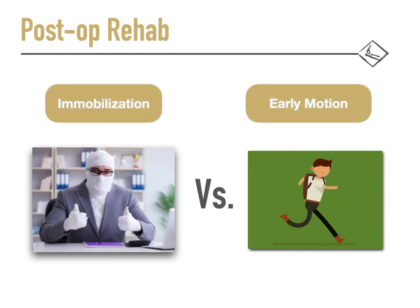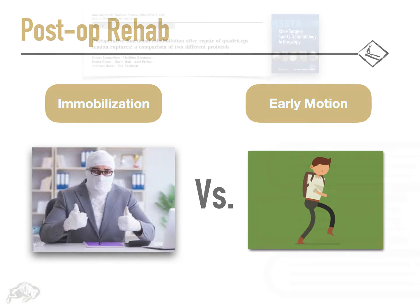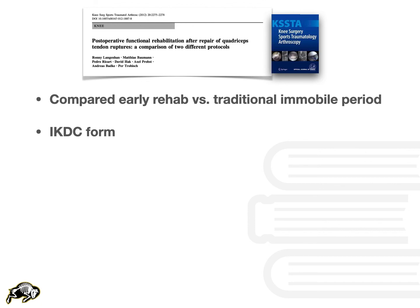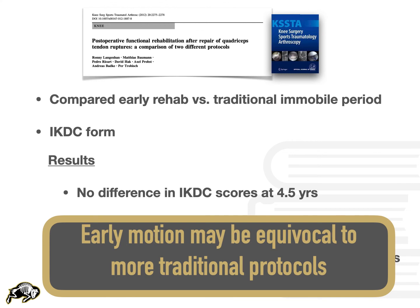Historically, prolonged immobilization for acute post-op management was utilized with repair of quad tendons, but early functional rehabilitation protocols have recently gained traction. Langenhan and colleagues recently compared early rehab versus a more traditional approach with an immobilization period. They found no difference in IKD scores at 4.5 years and also found similar rates of re-rupture and complications, suggesting that early motion may be equivocal to more traditional protocols that utilize early immobilization.